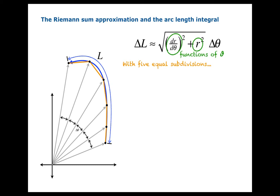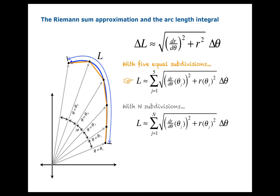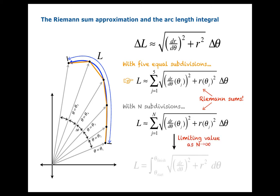Recalling that these are functions of theta, we need names for the arguments, so let's call them theta1, theta2, through theta5. The length will be approximately equal to the sum of these five segment lengths given by that formula. You could repeat this for any number of divisions. Both of these look suspiciously familiar — they're both Riemann sums. If you continue to divide the theta interval into more and more pieces, letting n go to infinity, you get an integral that looks similar to the one for Cartesian coordinates.